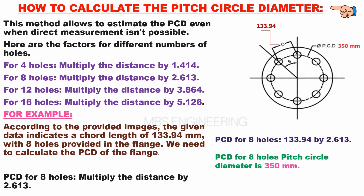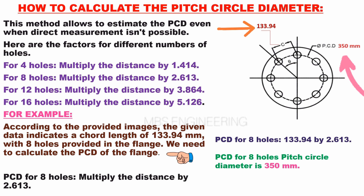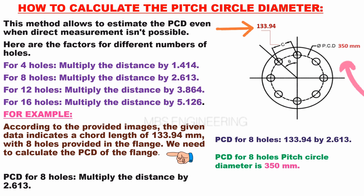We will calculate the pitch circle diameter PCD using the following example. According to the provided images, the given data indicates a chord length of 133.94 mm with eight holes provided in the flange. We need to calculate the PCD of the flange.